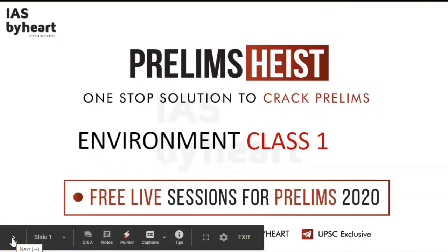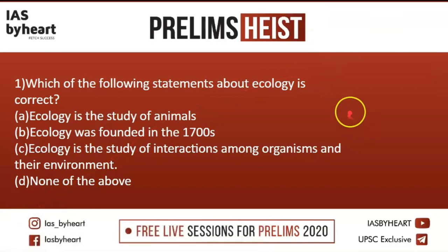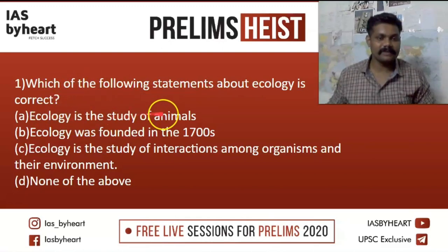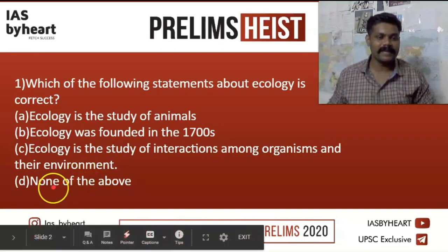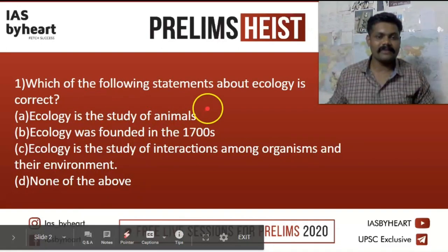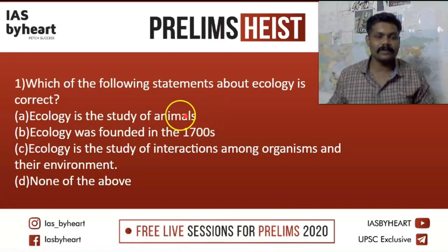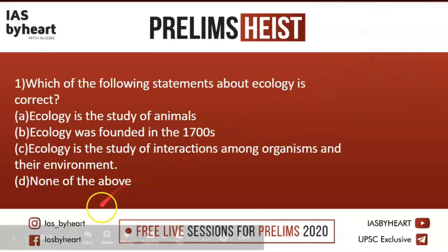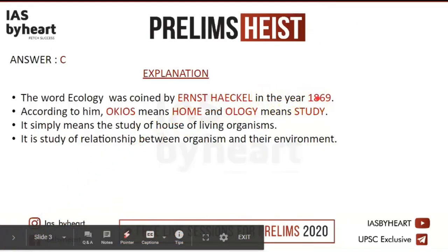Today we are going to discuss 10 prelims questions. First question: which of the following statements about ecology is correct? Option A: ecology is the study of animals. Option B: ecology was founded in the 1700s. Option C: ecology is the study of the interactions among organisms and their environment. Option D: none of the above. Ecology is not only about the study of animals — it is about the study of interaction among animals, so option A is wrong. Option B is also wrong — ecology was not founded in the 1700s.